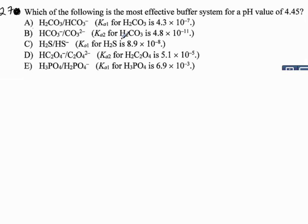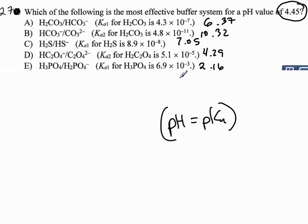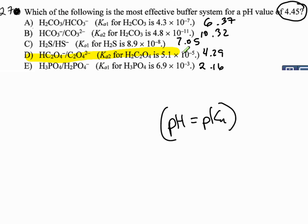Question 27: which of the following is the most effective buffer system? When picking a buffer, the key is to choose one whose pKa value is as close as possible to the desired pH. I take the negative log of all the given Ka values to find each pKa. Comparing them, D is the correct answer because its pKa value is closest to the desired pH, making it the best buffer system to select.